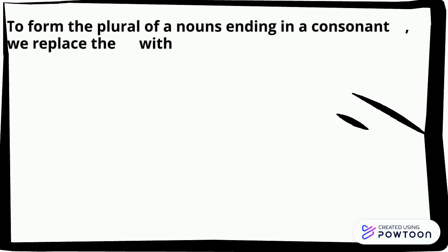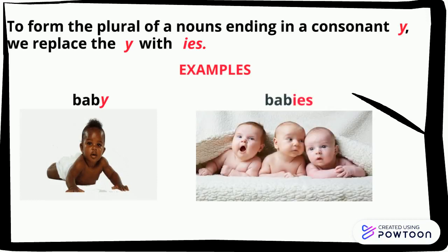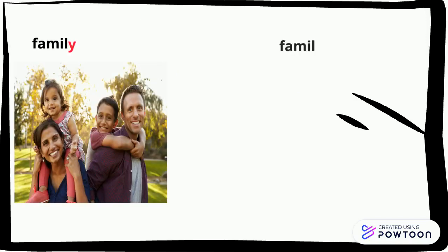To form the plural of nouns ending in a consonant y, we replace y with ies. Examples: baby becomes babies, family becomes families.